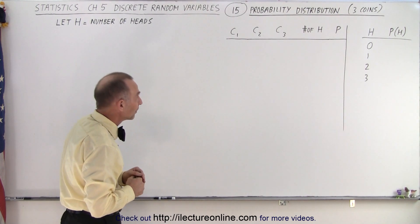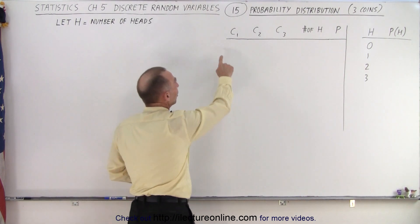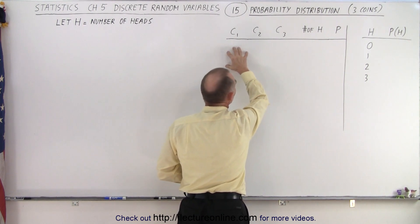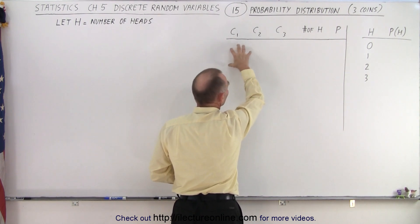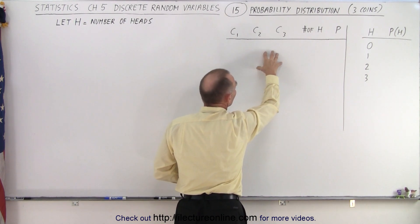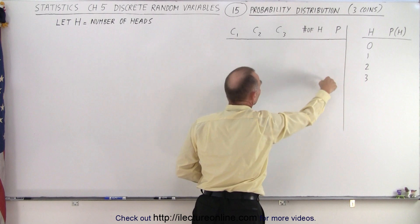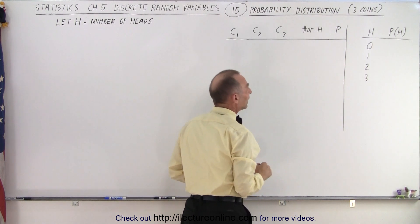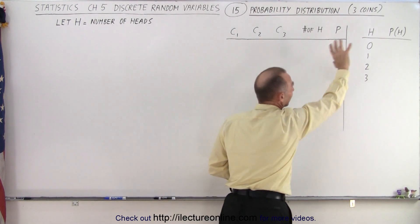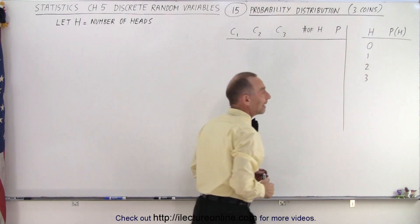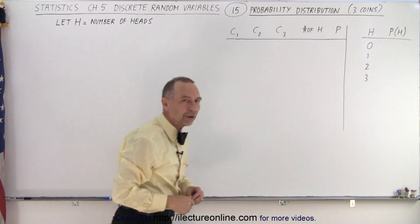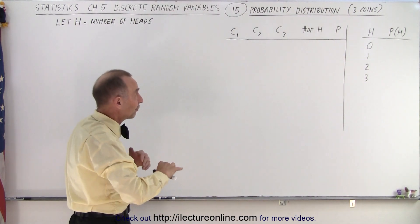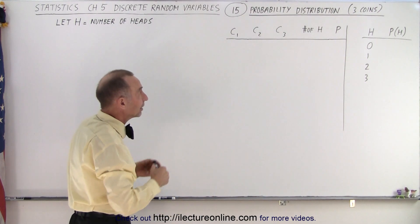So let's say we have three coins. We're going to put down whether or not we have tails or heads, the total number of heads, the probability of that combination, and then we'll have what we call a table for our probability distribution.